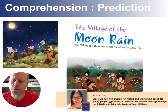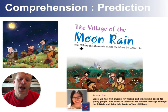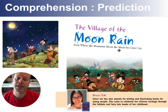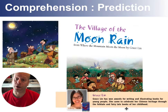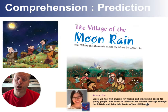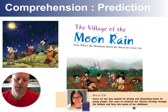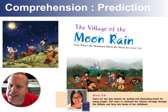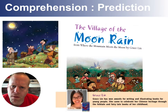This story was written by Grace Lynn. It's called 'The Village of the Moon Rain,' and it's from a larger story called 'Where the Mountain Meets the Moon.' She's won awards both for her writing and her illustrations in the book, and she is celebrating her own Chinese heritage in her folk tales and fairy tale stories that she writes. So if you had to take a guess at these pictures, these places and these people, what predictions would you make about this story?